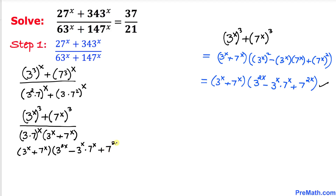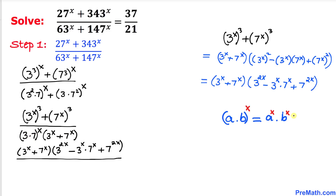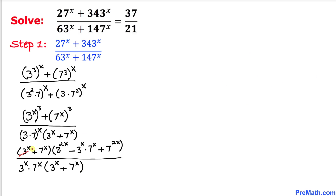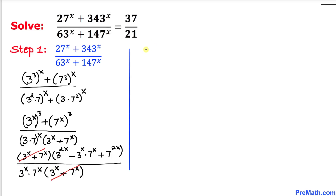The denominator is (3 times 7) to the power x, which equals 3^x times 7^x, multiplied by (3^x plus 7^x). We can see that the factor (3^x plus 7^x) cancels from both numerator and denominator, giving us 3^(2x) minus 3^x times 7^x plus 7^(2x), divided by 3^x times 7^x.